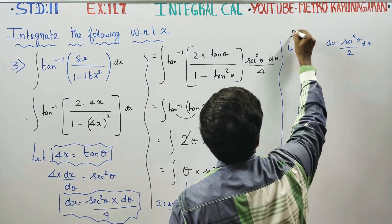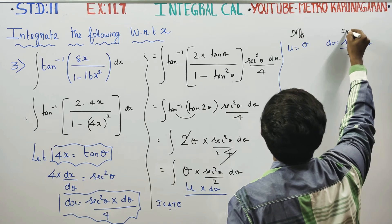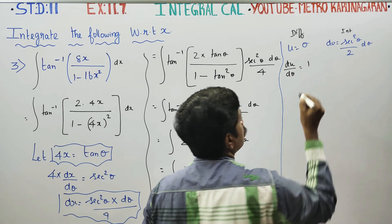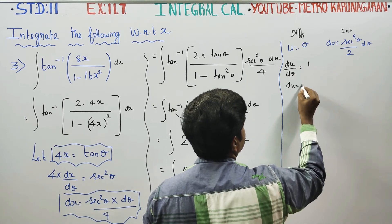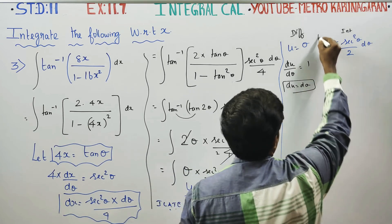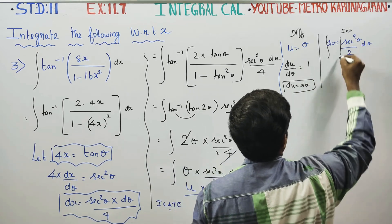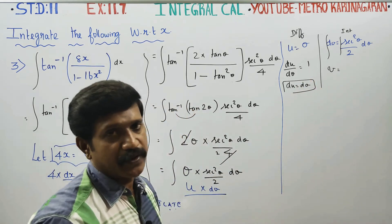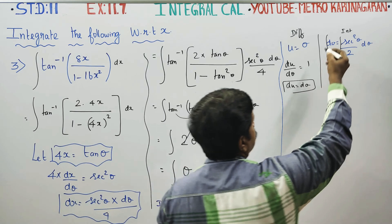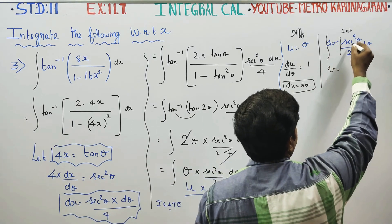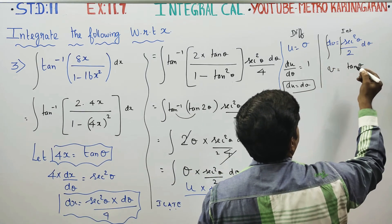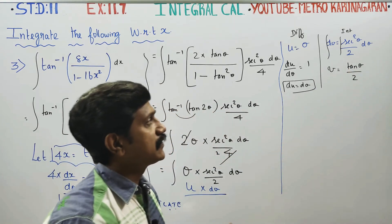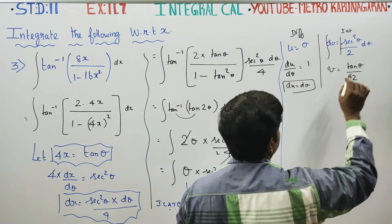Differentiate u: du by d theta equals 1, so du equals d theta. For v, integrate dv: integration of secant square gives tan, so v equals tan theta by 2. Now u and v are ready.